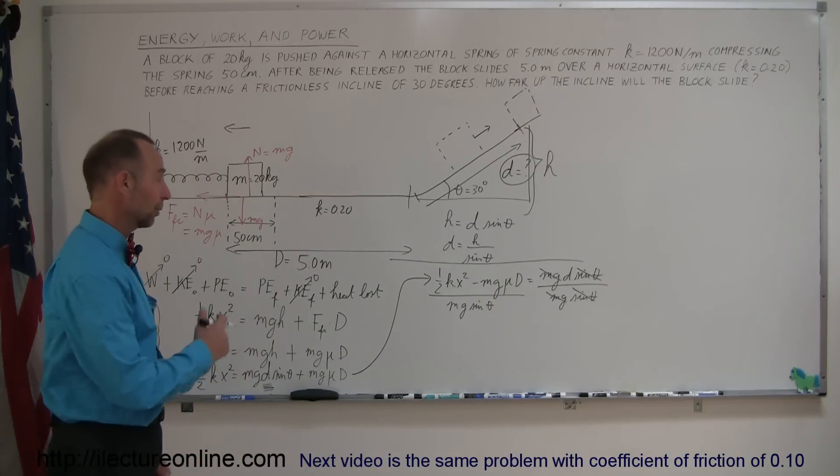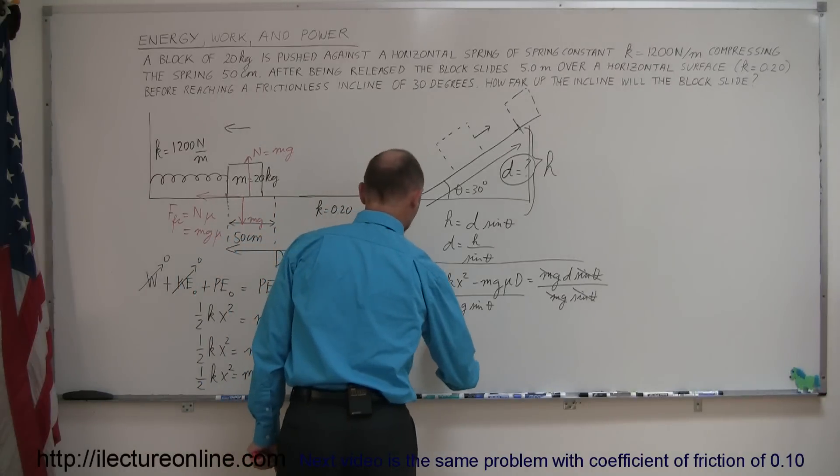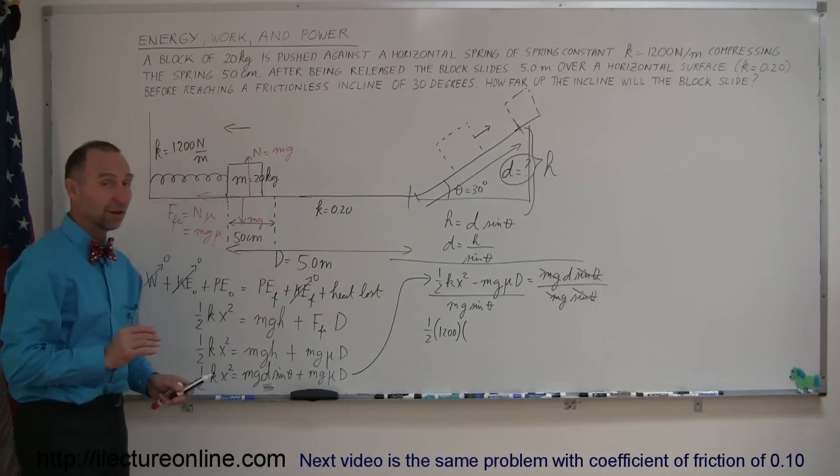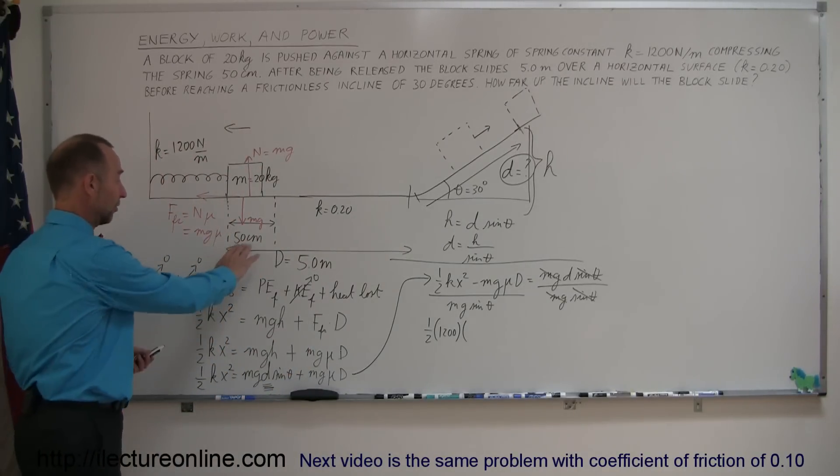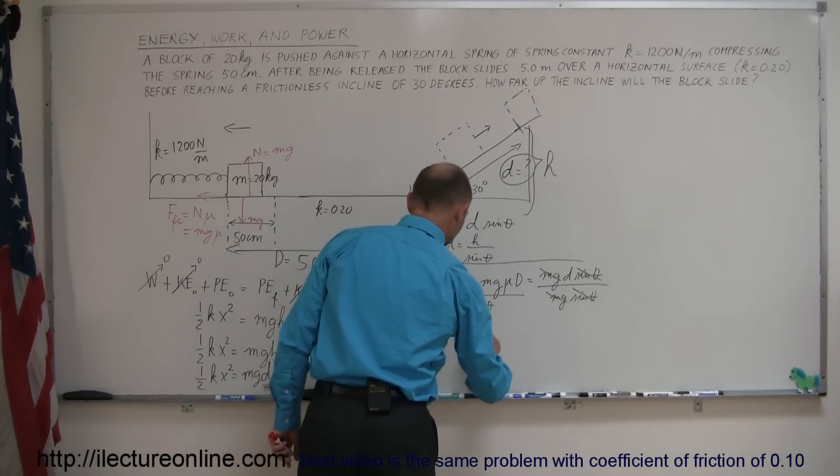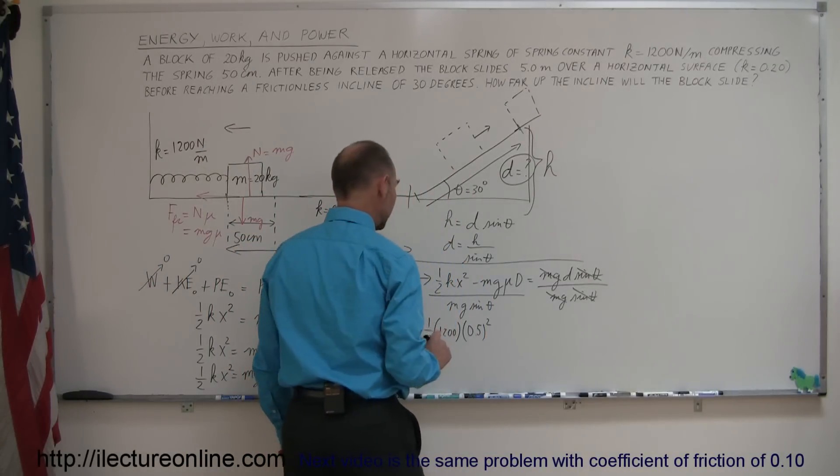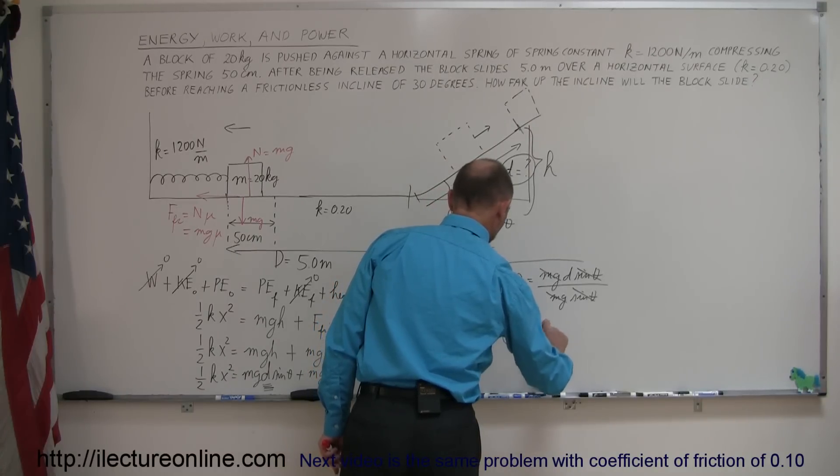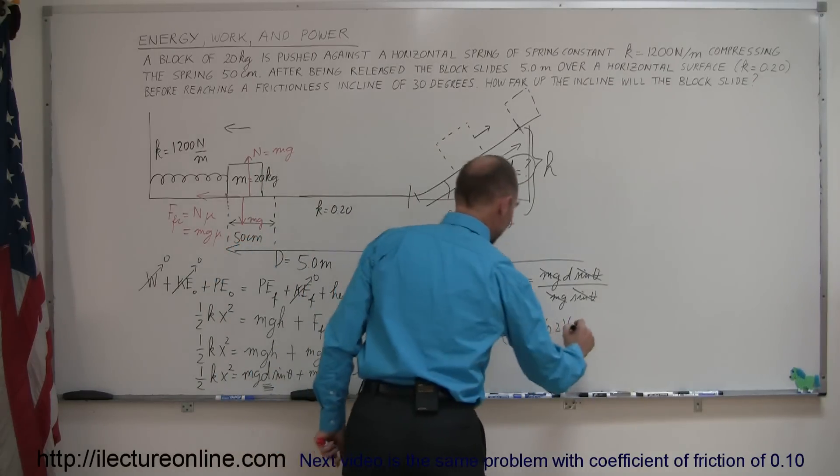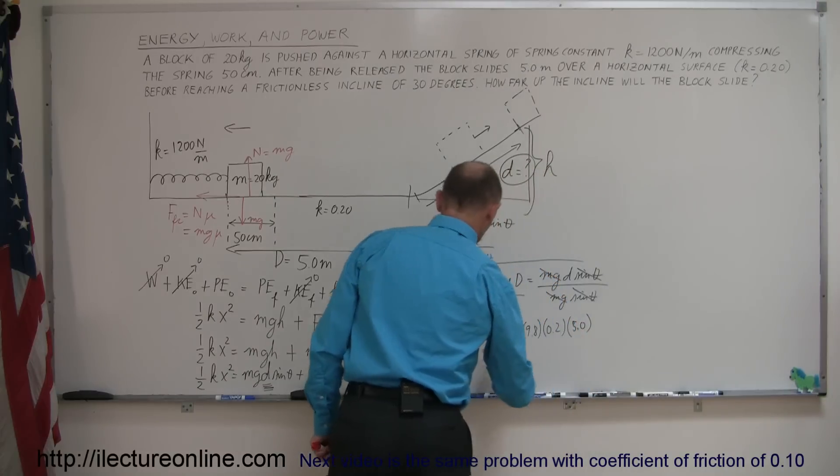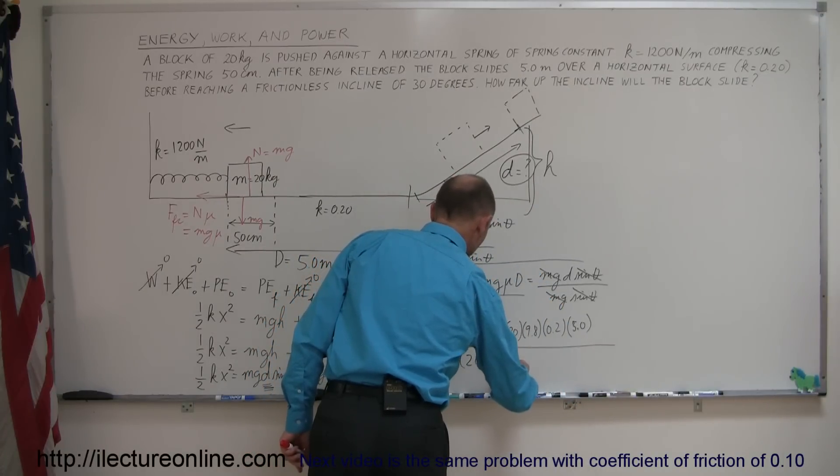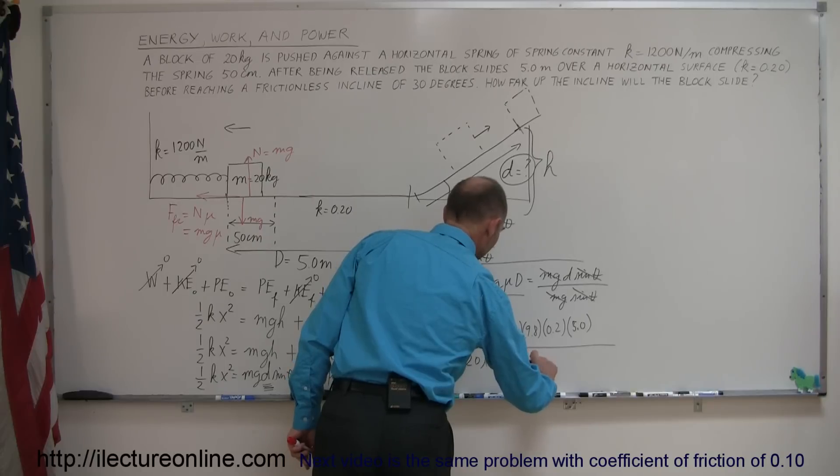And then all we have to do now is just plug in what those values are. So this is equal to ½ times k, which is 1,200, times x, which is, now be careful here, even though I said it's 50 centimeters, we have to convert to standard units, which is meters, and 50 centimeters is a half a meter, so 0.5 squared, minus the mass, which is 20, times g, which is 9.8, times mu, which is 0.2, times the distance, D here, which is 5 meters. The whole thing divided by the mass, 20, times g, 9.8, times the sine of 30 degrees.